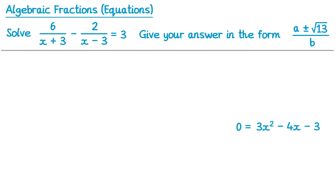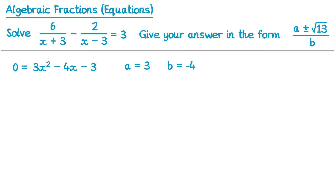So we end up with this quadratic equation to solve. We know from the form they want the answer in, we need to solve this using the formula or completing the square — and this one's probably going to be much easier using the quadratic formula. So we need to find the values of a, b and c — they're the coefficients of x squared, x, and the constant term. The coefficient of x squared is 3, the coefficient of x is negative 4, and the constant term at the end is negative 3. So a is 3, b is negative 4, and c is negative 3.